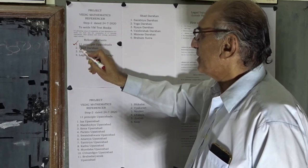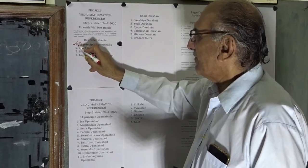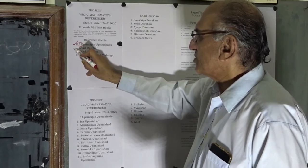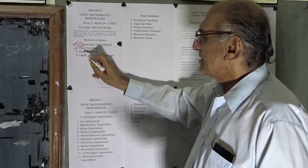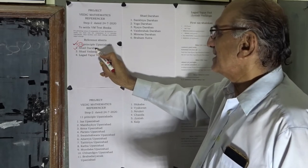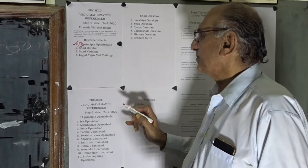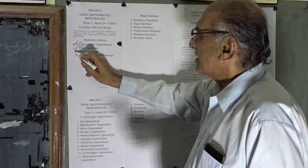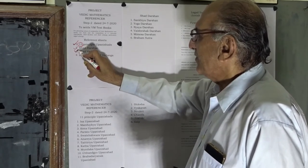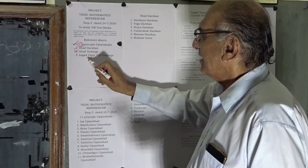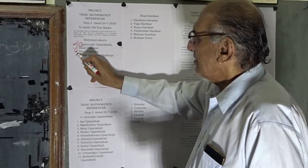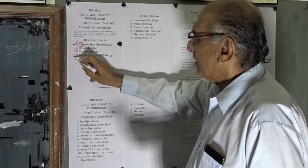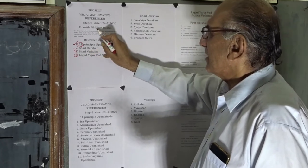The first of these sources is the principal Upanishads — there are eleven principal Upanishads. The second source is Shad Darshan, the six disciplines of Indian philosophy. There are six Vedangas. These are the basic sources for initiating the settlement of textbooks.